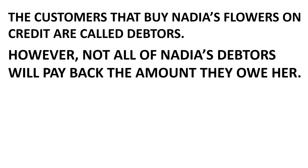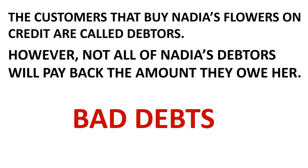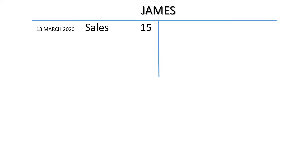However, not all of Nadia's debtors will pay back the amount they owe her. Therefore, the debtors are considered to be bad debts. Let's look at this scenario. Suppose James owes Nadia $15 for the flowers he bought on the 18th of March but fails to pay back Nadia at the end of the month. This means that James' account has to be credited with $15 and closed off because Nadia is not going to receive any payment from him.